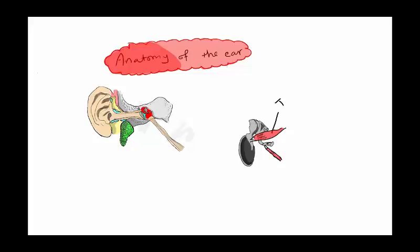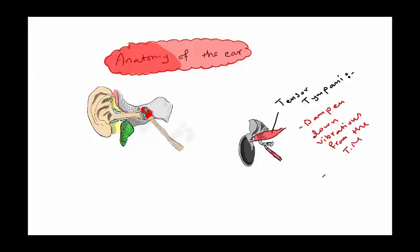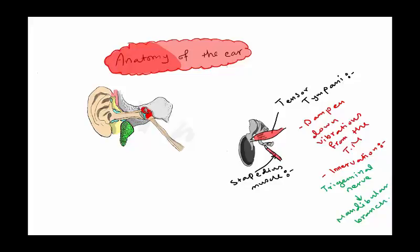There are muscles attached to the ossicles. The first is the tensor tympani, attached to the malleus. Its function is for damping down vibrations from the tympanic membrane. Its innervation is from the mandibular branch of the trigeminal nerve, cranial nerve 5. The other muscle is the stapedius, attached to the stapes, and it is for damping down vibrations from the stapes. It is innervated by the facial nerve.